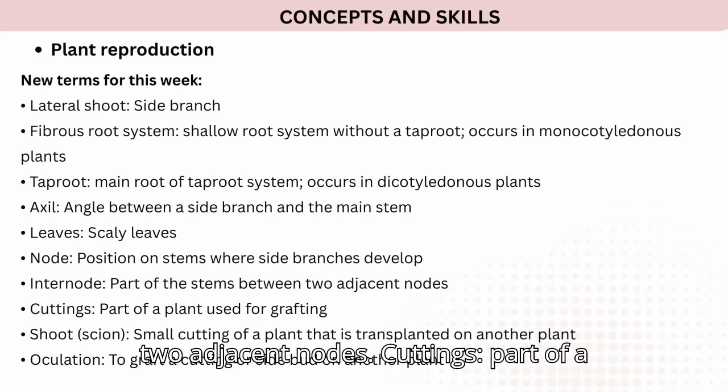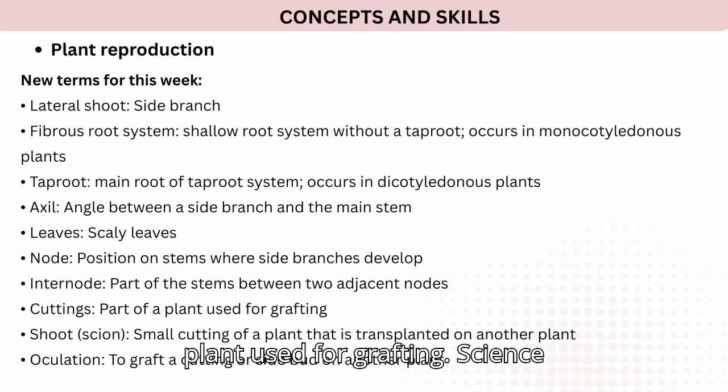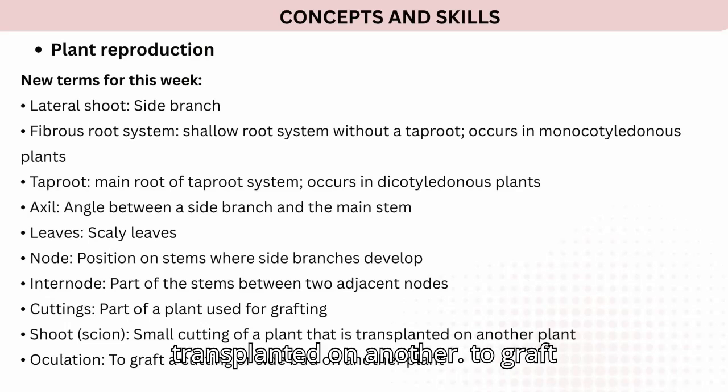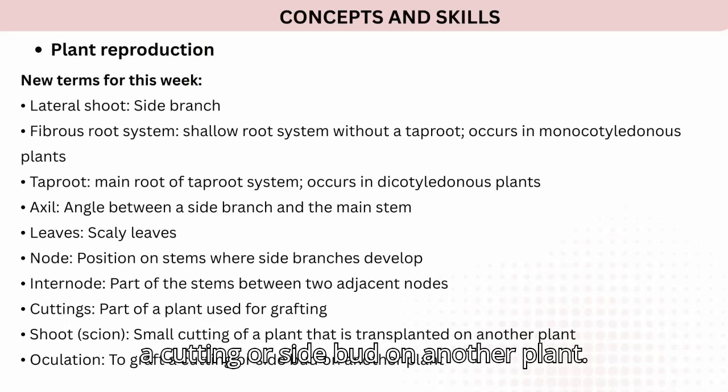Cuttings: part of a plant used for grafting. Scion: a small cutting of a plant that is transplanted onto another plant. Oculation: to graft a cutting or side bud onto another plant.